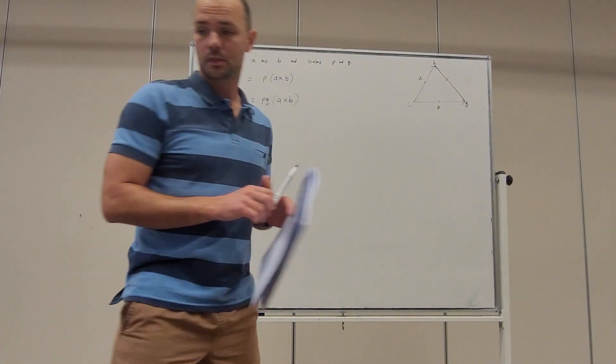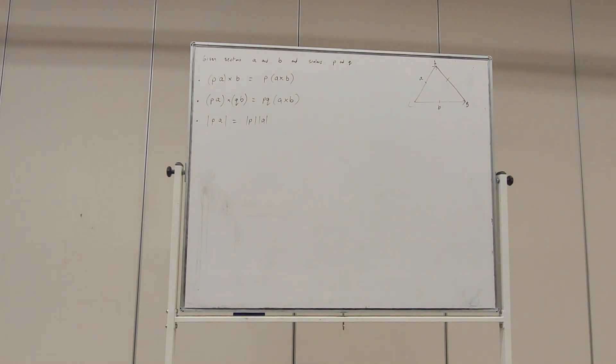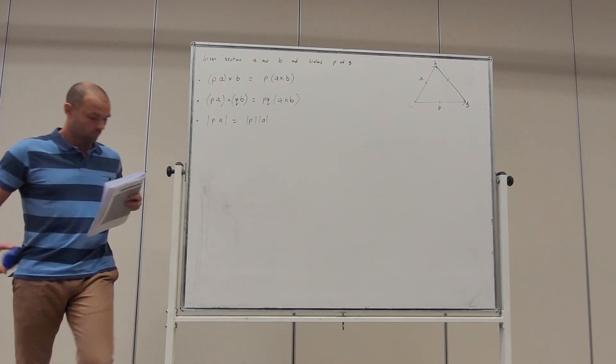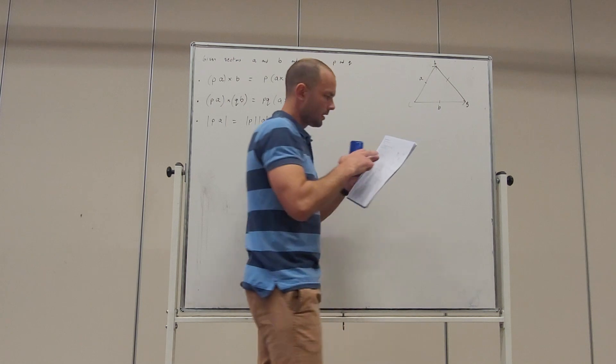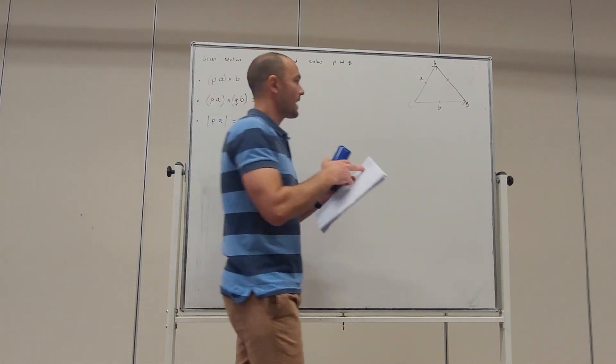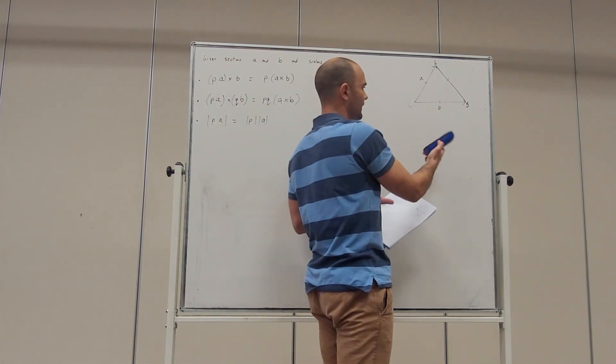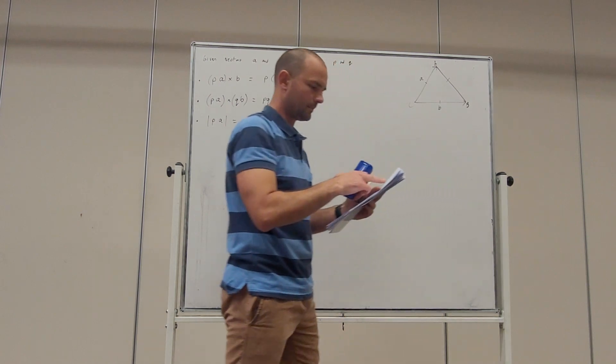Alright, so this is your vector proof exam question 1, and we'll go through two of these. And so what we have is, consider the equilateral triangle ABC, and we have let CA equal vector A, and the vector from C to B equal vector B.